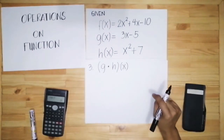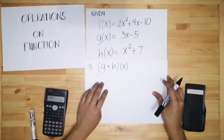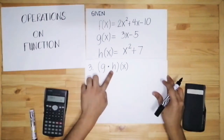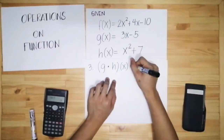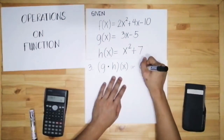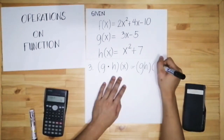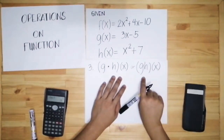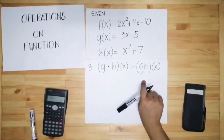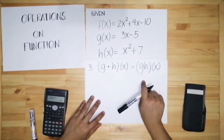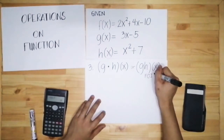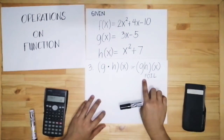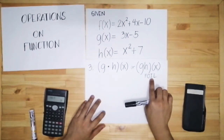Next, let's have the third example. We have the multiplication of g and h, so let's get the product — g times h of x. It can also be written as g·h of x with the two function names placed together. In multiplication, we usually use the FOIL method: First, Outer, Inner, and Last.